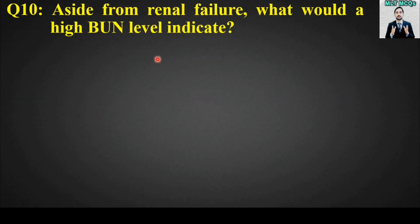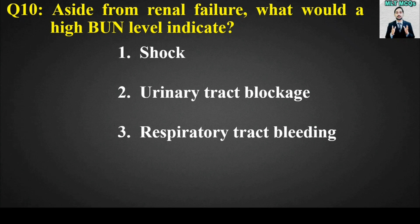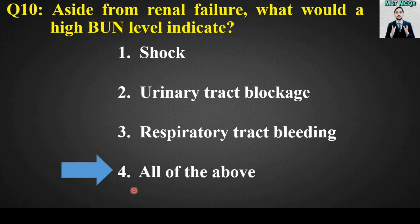MCQ number ten: Aside from renal failure, what would a high BUN level indicate? Options are: shock, urinary tract blockage, respiratory tract bleeding, all of the above. The right answer is option number four — aside from renal failure, a high BUN level in blood would indicate shock, urinary tract blockage, as well as respiratory tract bleeding.